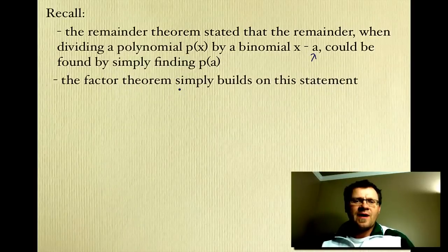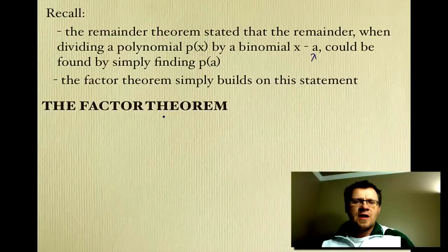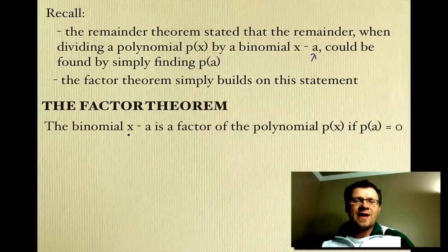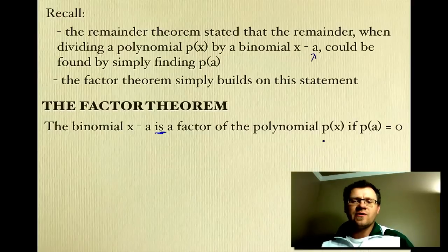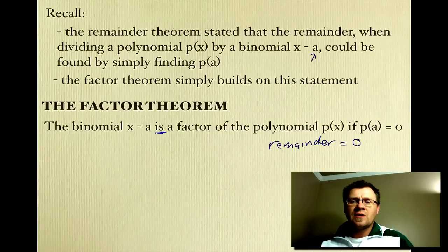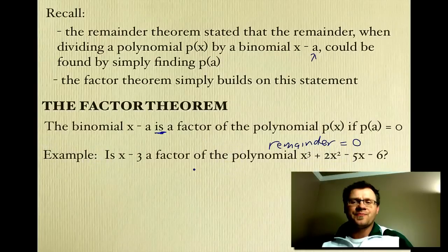The Factor Theorem simply builds on this statement. The Factor Theorem says that the binomial x minus a is a factor if P of a equals 0, which means that you get a remainder of 0. That's when we know that a binomial happens to be a factor.